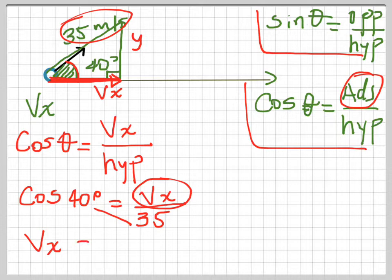Vx equals cosine of 40. Let me do that in my calculator. Cosine of 40 is 0.76 multiplied by 35, which equals 26.8.